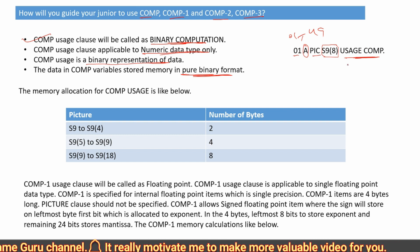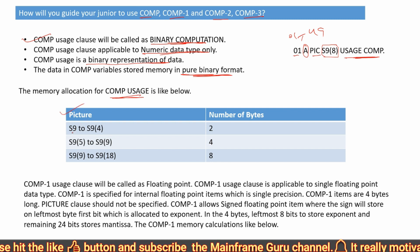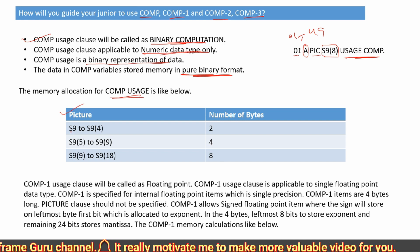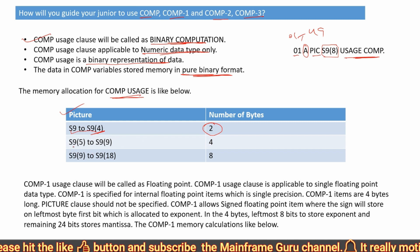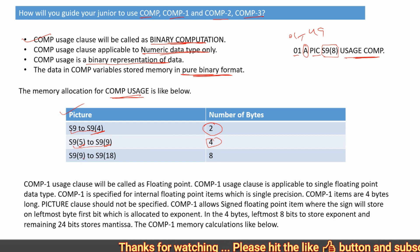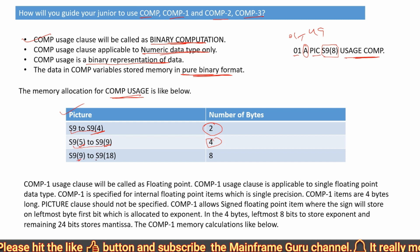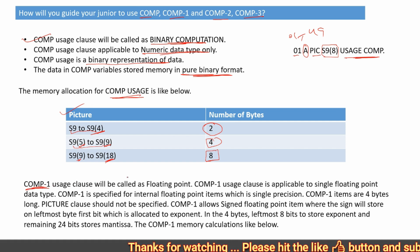Regarding memory allocation for COMP: if PIC clause is S9(1) to S9(4), it will allocate 2 bytes. If PIC clause is between S9(5) and S9(9), it will allocate 4 bytes. If PIC clause is between S9(9) and S9(18), it will allocate 8 bytes.